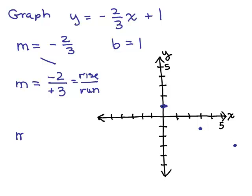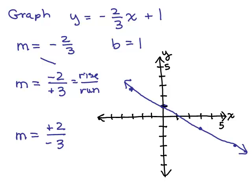If I write the slope as positive 2 over negative 3, that's a way to get a point to the left of the y-axis, because a negative denominator means going left. So I go left 3 spaces and then up 2, giving another point on the graph. Now draw an accurate line — make sure you use a real ruler.